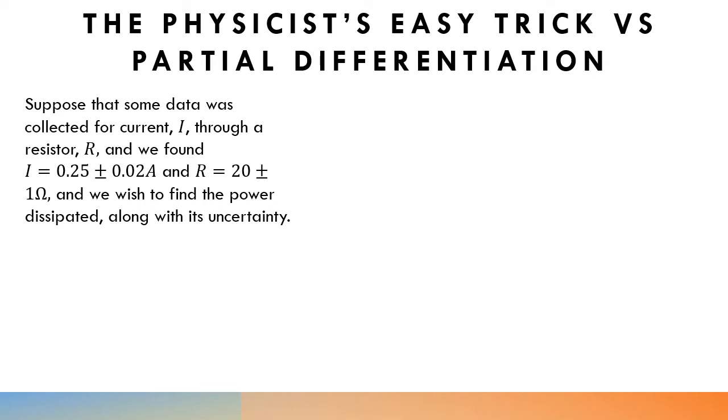That may be the tolerance of the resistor, and we wish to find the power dissipated along with its uncertainty.